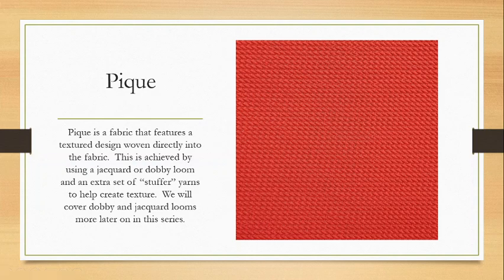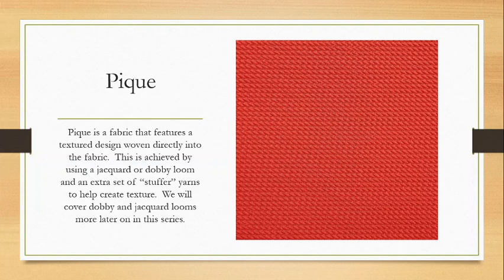Piqué is a fabric that features a textured design woven directly into the fabric. This is achieved using either a Jacquard or Dobby loom with an extra set of stuffer yarns to help create texture. Piqué textures are not super complicated — typically geometric in nature — but defined by a raised texture. Those stuffer yarns create a little bit of added thickness that allows for a more defined, almost bumpy texture in the fabric.